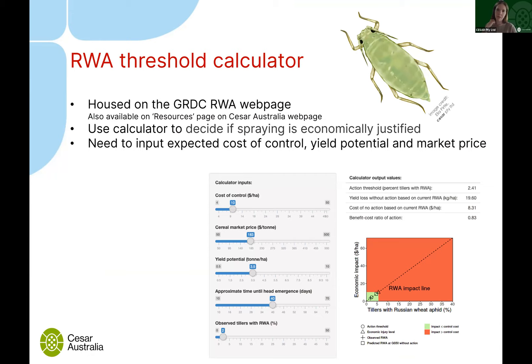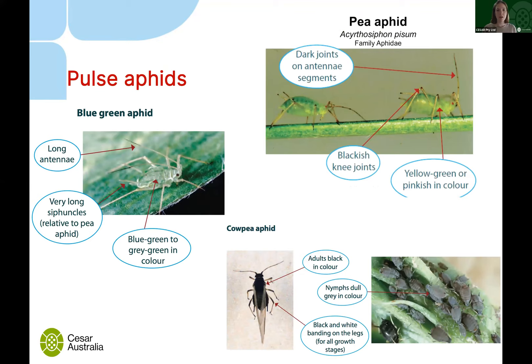A really useful tool for Russian wheat aphid management is the Russian Wheat Aphid Threshold Calculator, developed by CESAR as part of a GRDC project. You can find it on the GRDC Russian wheat aphid webpage — I'll paste the link in the chat. You input the expected cost of chemicals, yield potential, and market price, and the calculator tells you whether it's economically justified to spray. This helps ensure you're not spraying when you don't need to.